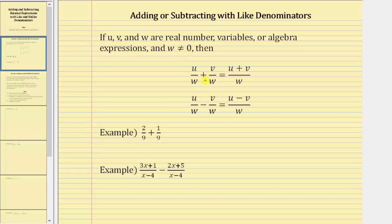For our first example, let's consider two ninths plus one ninth. Notice how we have a common denominator, or like denominator, of nine. Therefore to find the sum, the denominator remains nine and we add the numerators, which gives us two plus one. Two plus one is three.